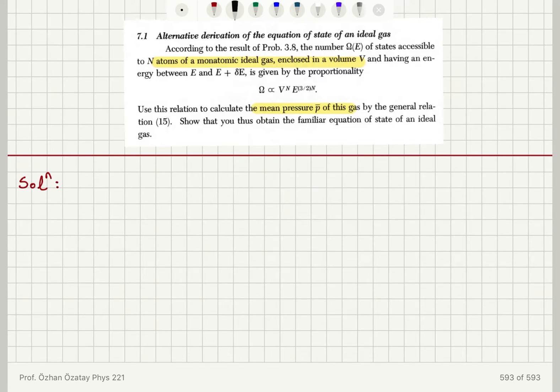Now, we have two important results in this chapter. One is that beta is equal to the derivative of natural logarithm of omega with respect to energy, which is defined as 1 over kT. And this is at constant external parameters.